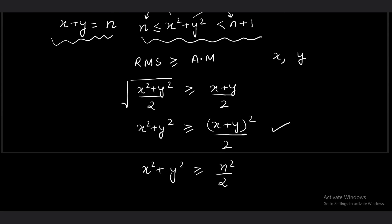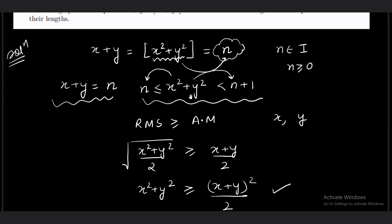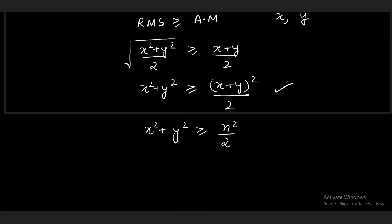So x squared plus y squared is greater than or equal to n²/2, and at the same time it has to be less than n+1 — otherwise this equation will not be valid. Because we are taking it as integer n, we have another constraint: x squared plus y squared must be less than n+1. So n is a non-negative integer and we now have another condition on n from combining these two inequalities.